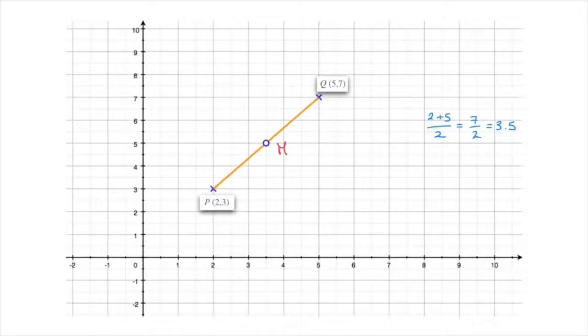In a similar way, to find the Y coordinate of the midpoint, we need to keep in mind that it has to be halfway between 3 and 7. Those are the Y coordinates of the endpoints. So, to get halfway between 3 and 7, we calculate the average of 3 and 7.